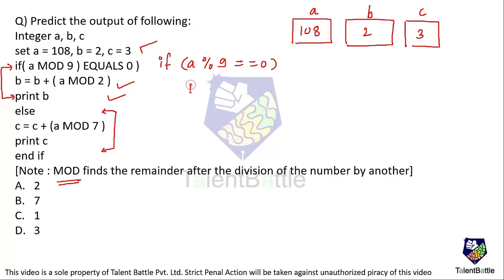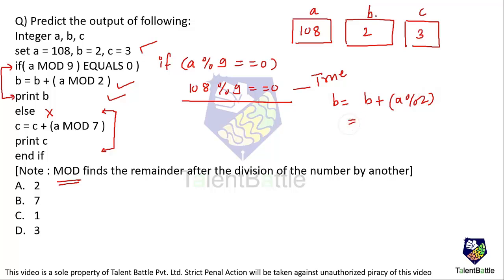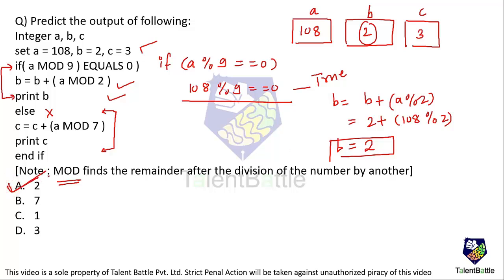Since a is 108, the condition 108 mod 9 equals 0 is true — remainder is 0 — so the if block executes. Now calculate b: b = b + a mod 2 = 2 + (108 mod 2) = 2 + 0 = 2. Since we are printing b, the final output is 2. Option A is the correct answer.